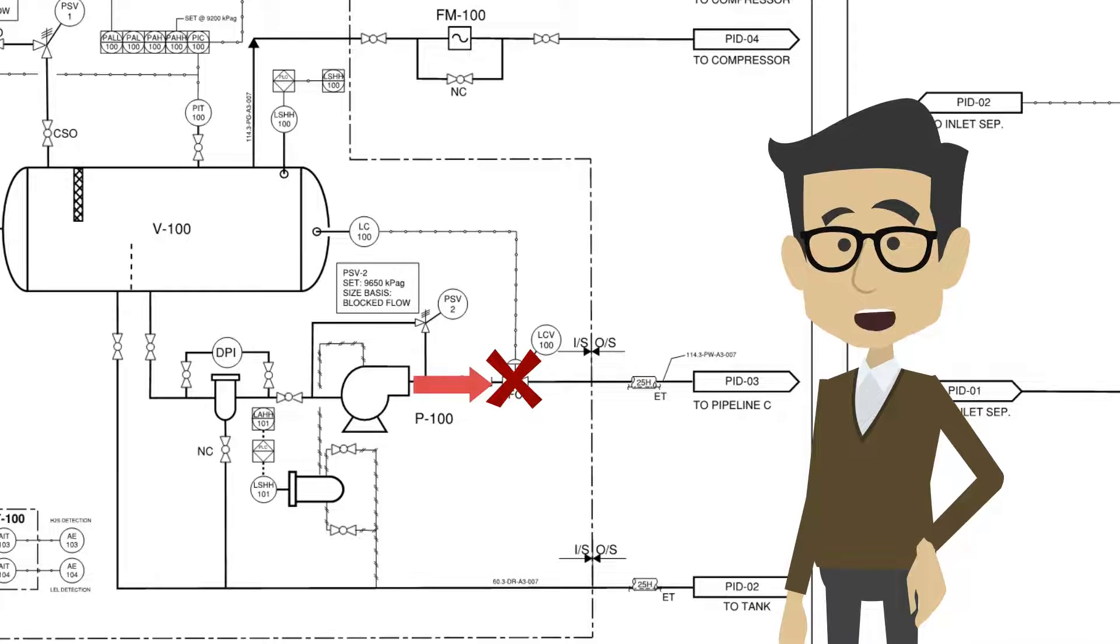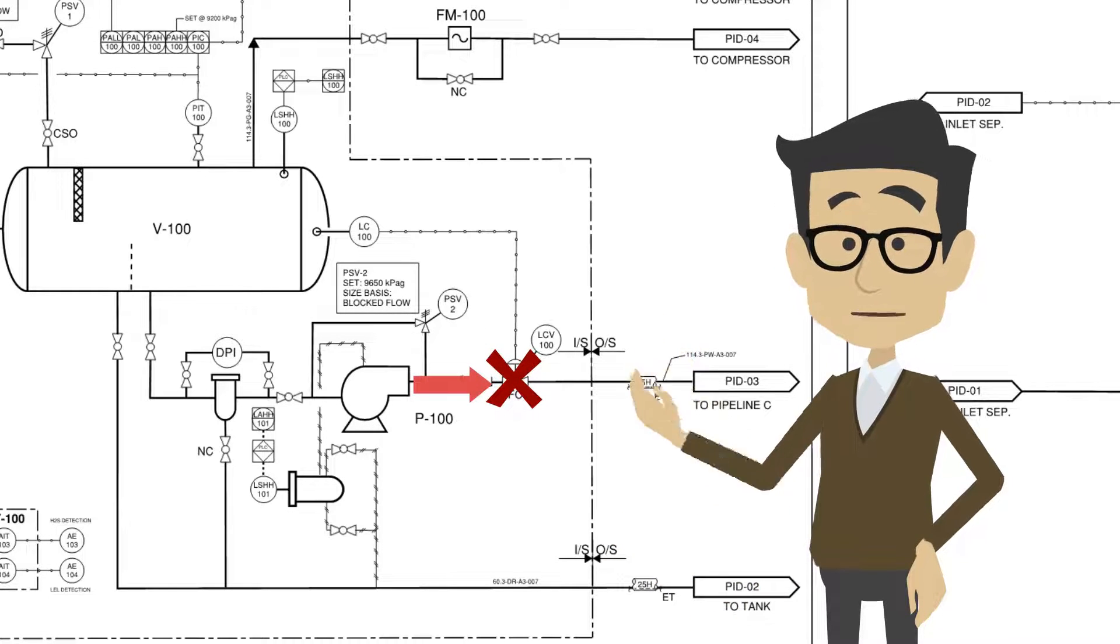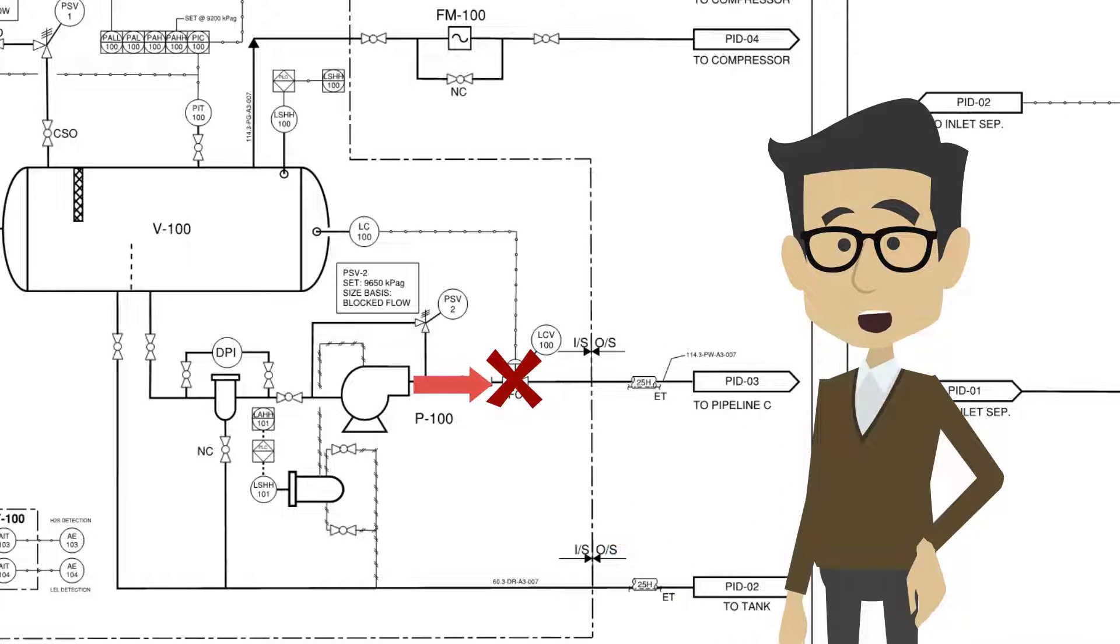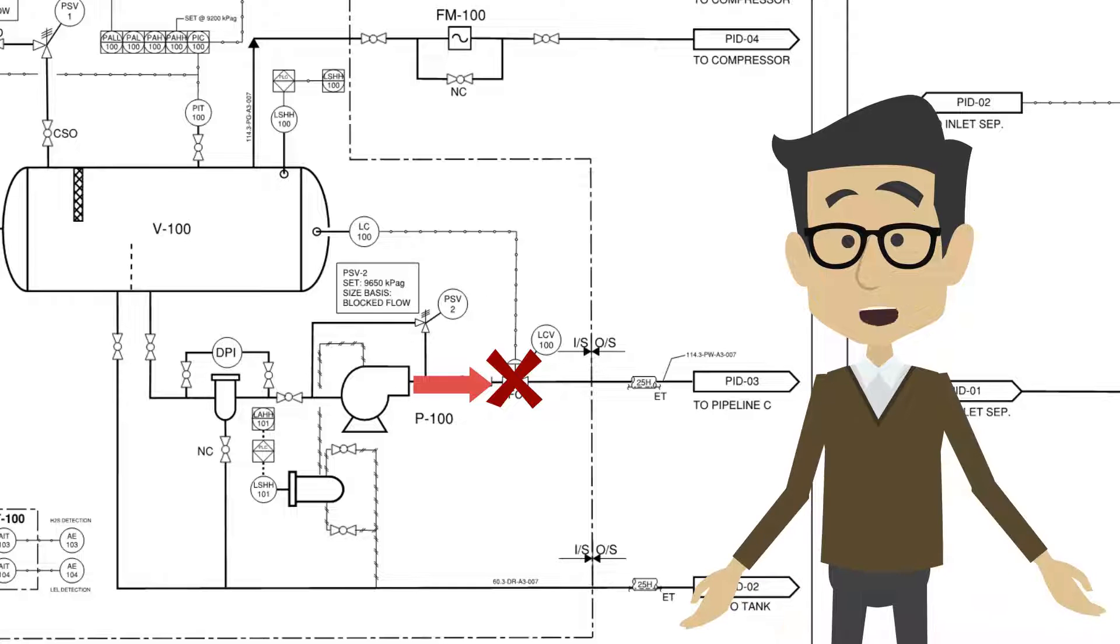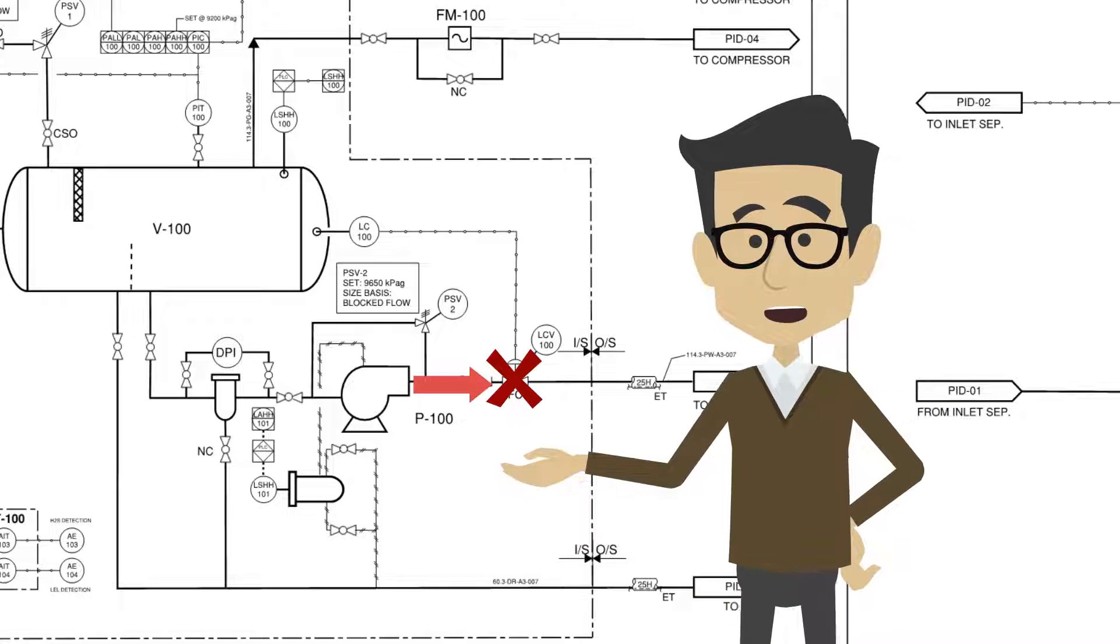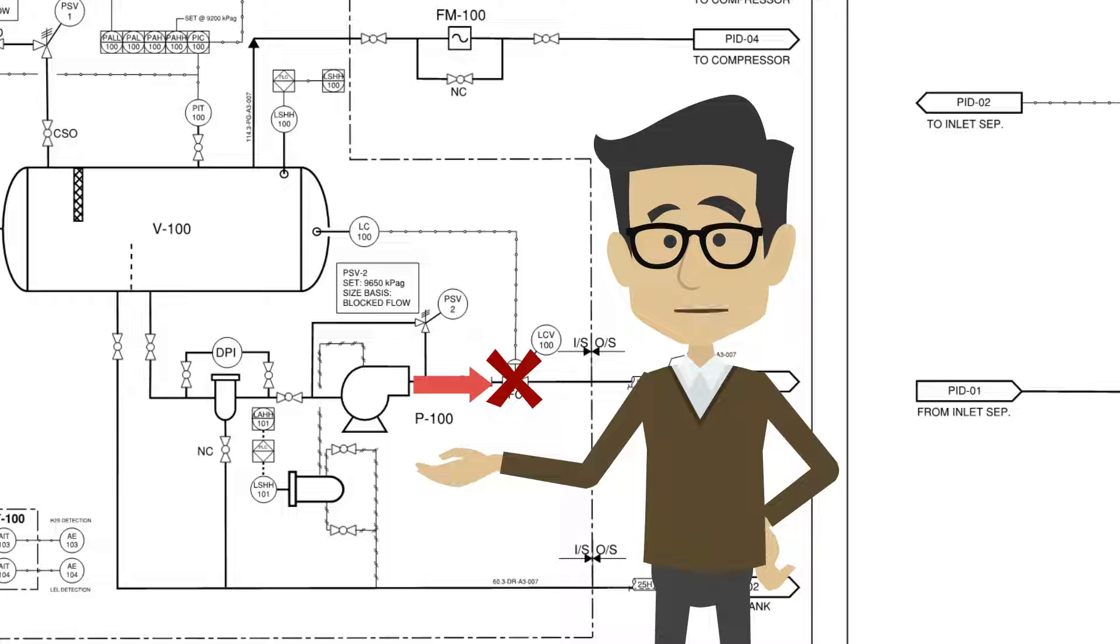Let's say LCV-100 fails closed. The incoming pressure from P-100 could overpressure piping. With pumps, it is also worth noting if there is a secondary seal, indicated by a tubing line from the pump to the drain system, or by seal pots. The secondary seal will alter the consequences of a primary seal failure.